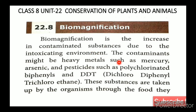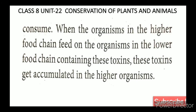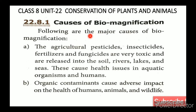The particles increase from lower level to higher level. When the organism in the higher food chain feeds on organisms in the lower food chain containing these toxins, these toxins get accumulated in the higher organism — this is biomagnification. The major causes of biomagnification include agricultural pesticides, insecticides, fertilizers, and fungicides, which are very toxic and are released into the soil, rivers, lakes and seas, causing health issues in aquatic organisms and humans.